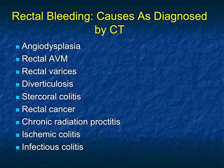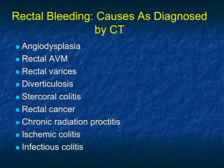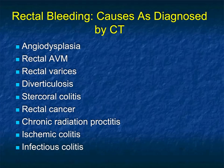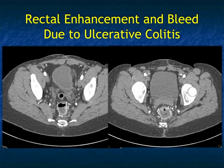An area of common bleeding that you need to look at carefully — and why techs need to scan down a little lower routinely, especially on GI bleeding studies — is because rectal bleeding is a common pathology. It could be due to angiodysplasia, rectal AVMs, rectal varices in patients with cirrhosis, diverticular disease, stercoral colitis, radiation, ischemia, or infectious etiologies.